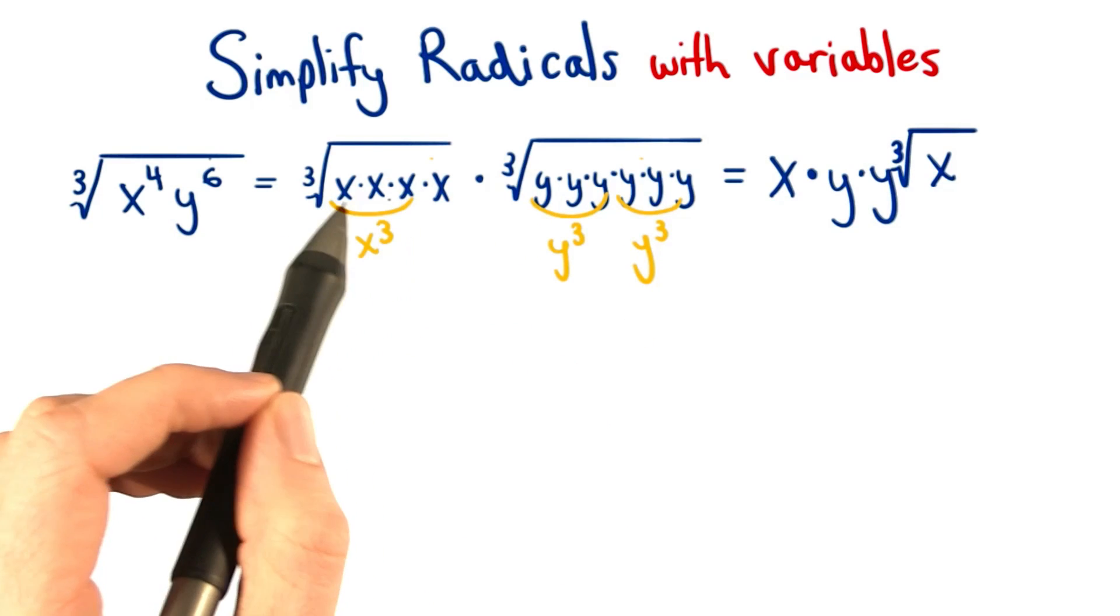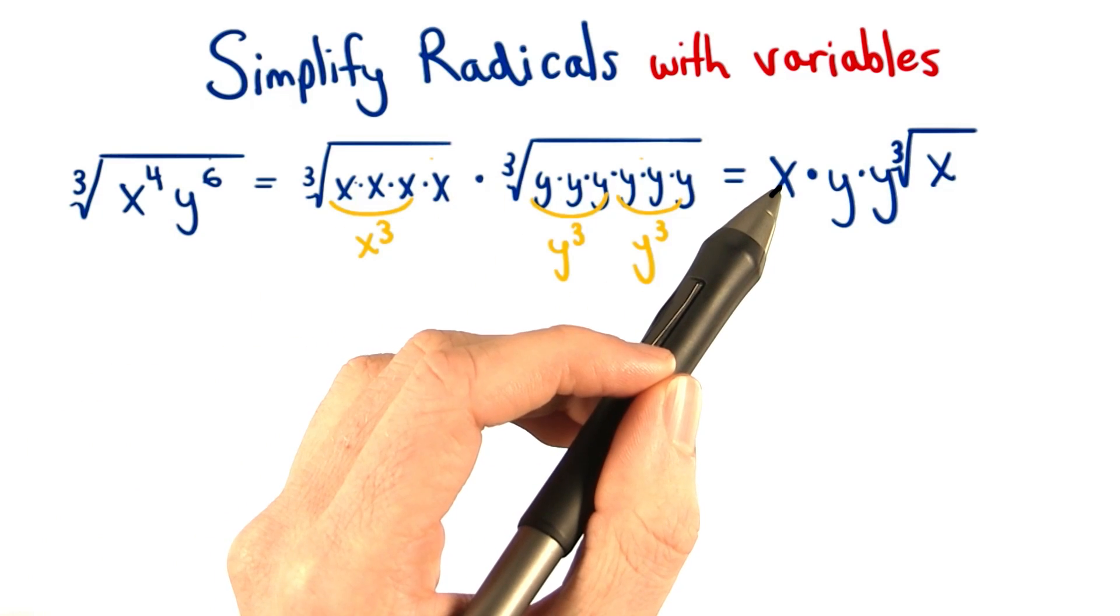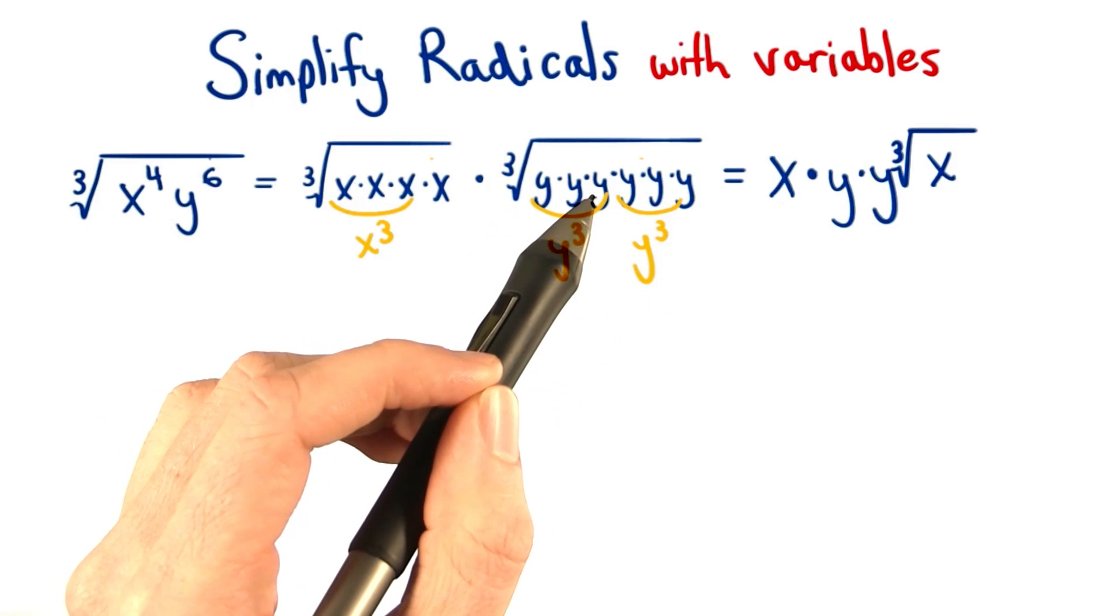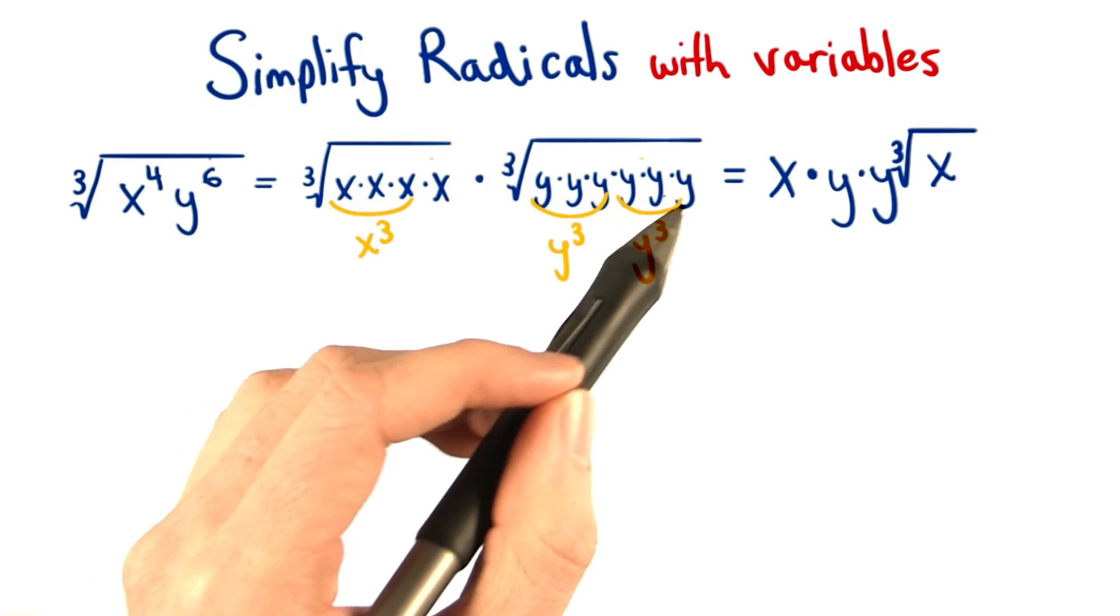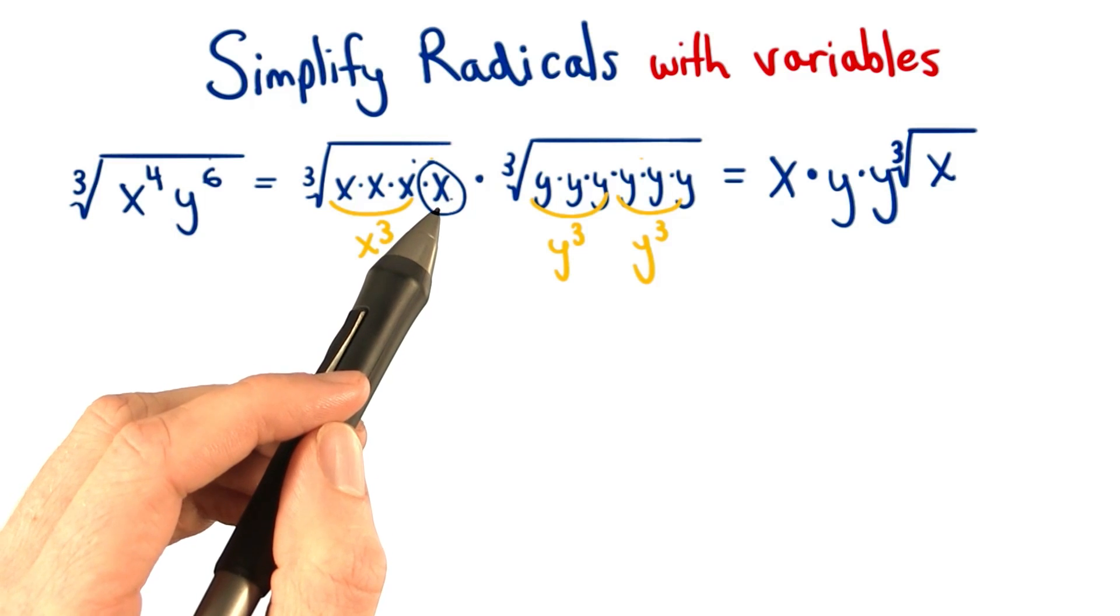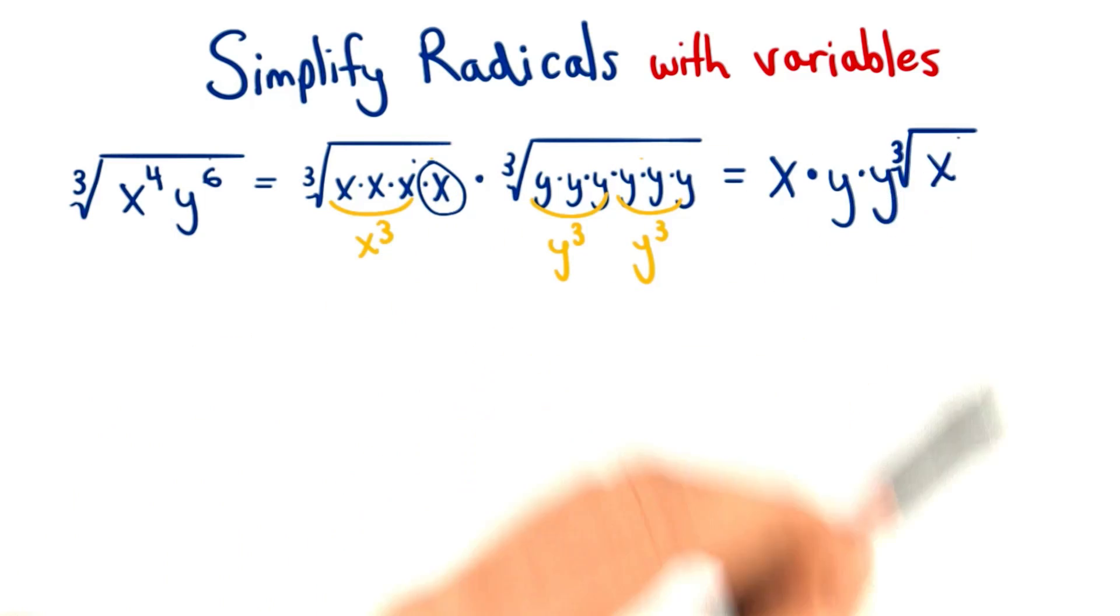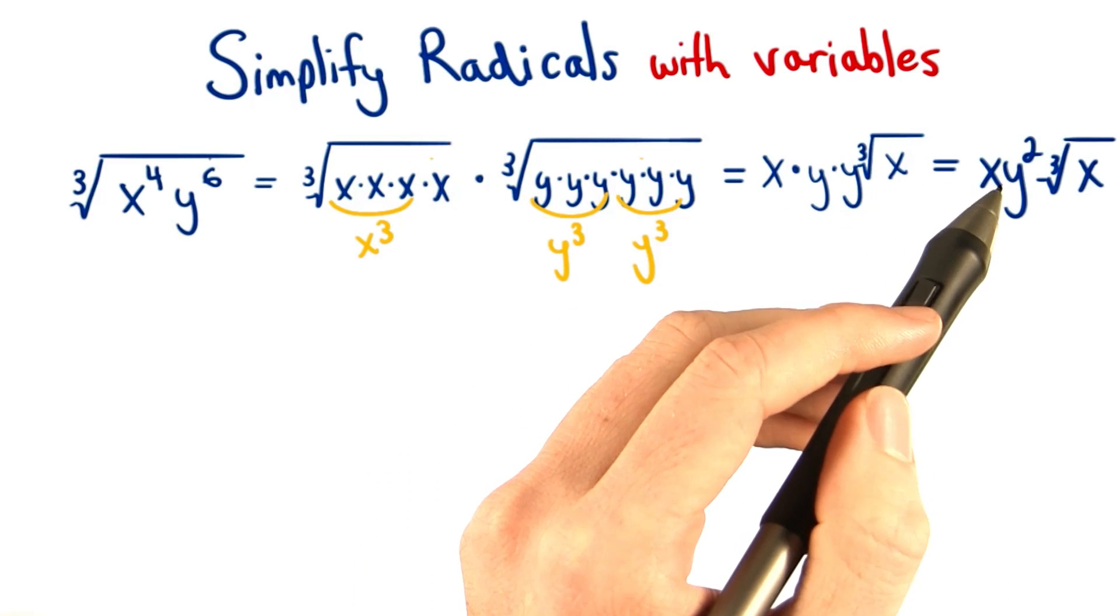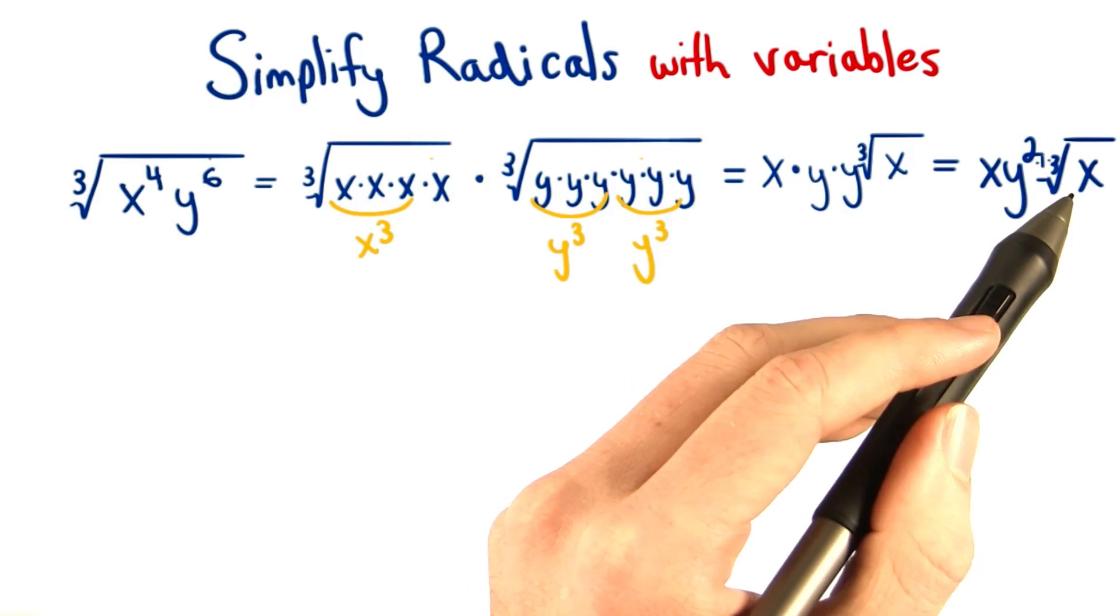Since our x variable repeats three times, we can pull one of them out. We can also pull out one y from these three, and one y from these three. This x, however, is a little bit lonely. It doesn't have three of itself, so we leave it inside the cube root. So our final answer is x times y squared times the cube root of x.